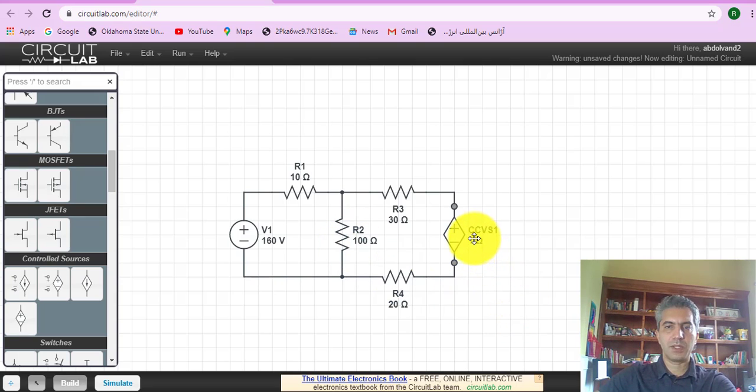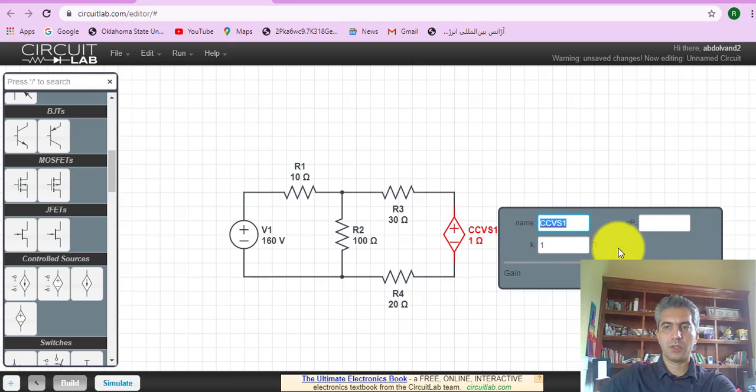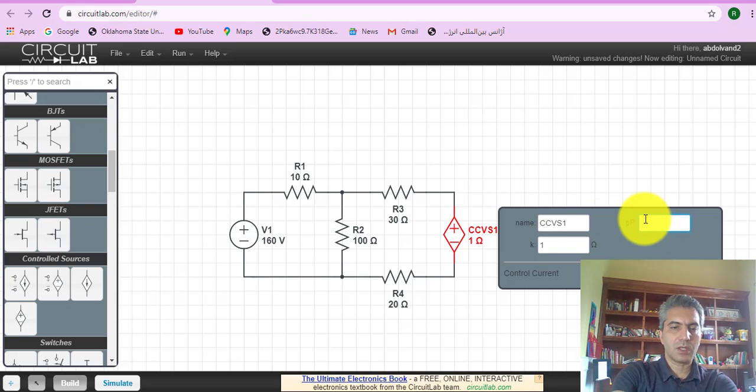Now the complicated one is this one where I have to define what current is actually controlling the value of this voltage. That's the current passing through the 100 ohm going from the bottom. So it would be the current passing through R2 at node B. This is node A, node B.